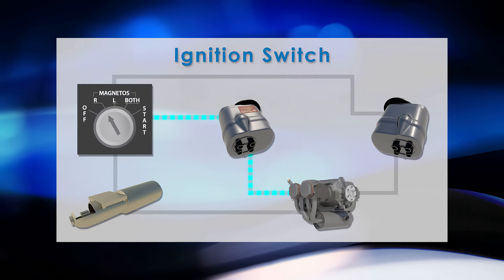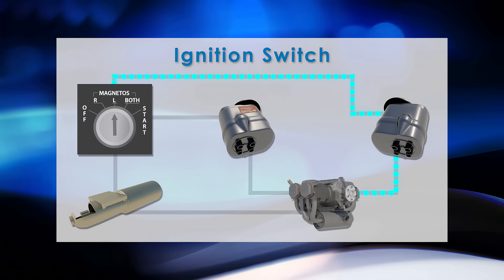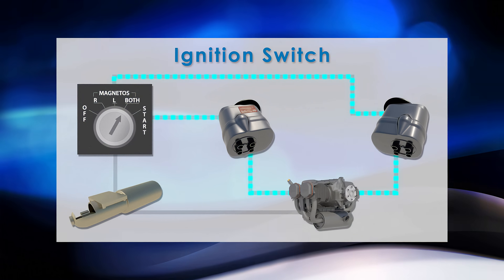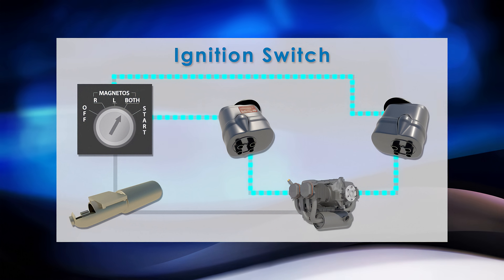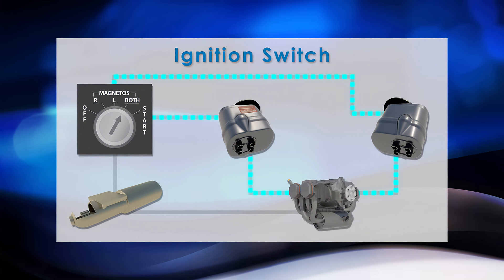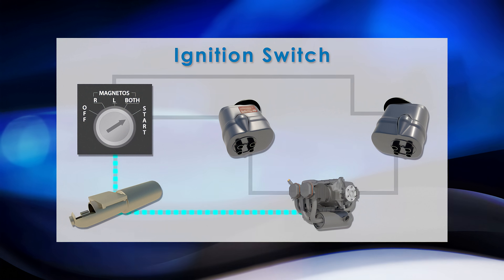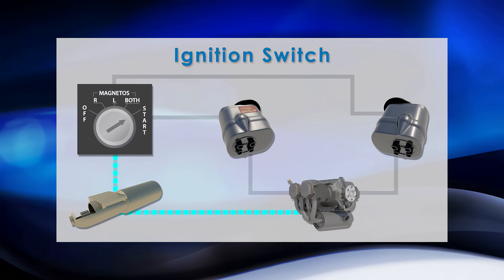If the switch was positioned on the both selector, which is its normal position for flight, both magnetos would be powering the spark plugs. Finally, the start position. This engages the starter, which turns the crankshaft to start the engine.